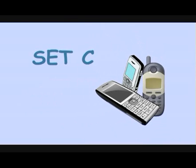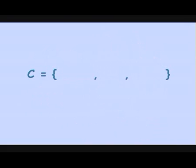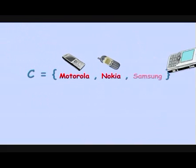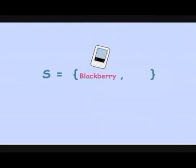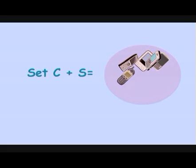Now, let's look at union of sets. Let's look at two sets, and we'll call them set C and set S. The set C has three cell phones and can be written as C equals open curly brackets. The set S has two PDAs in it. So, we can write S equals to curly brackets, Blackberry, and iPhone. We can unite these sets, bring them together and join them into one. This is easy to do since set C and set S are two sets containing phones.